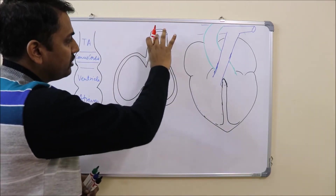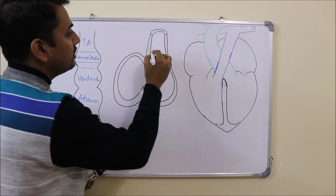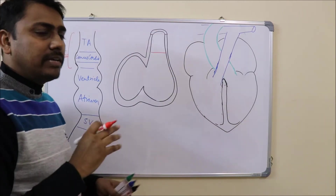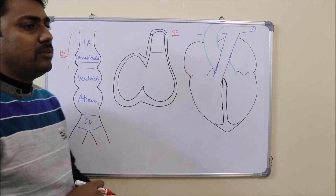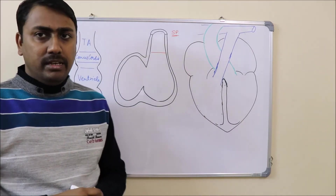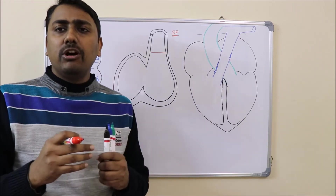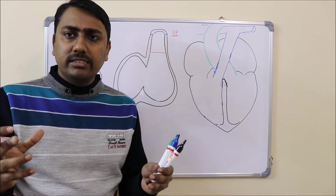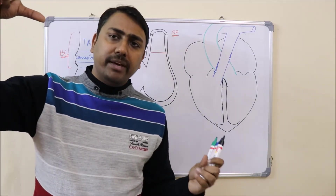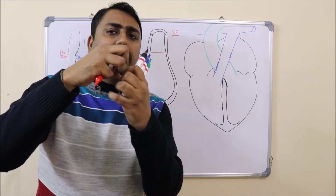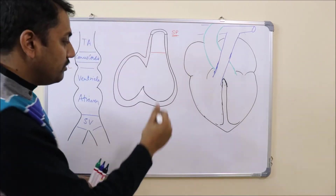In the region of the truncus arteriosus, a septum is formed which is known as the spiral septum or the truncus arteriosus septum. This septum is spiraling and is formed due to the proliferation of two swellings known as truncal swellings, located in the right superior aspect and a left inferior aspect. They begin to join toward each other in such a manner that the septum forms a spiral.